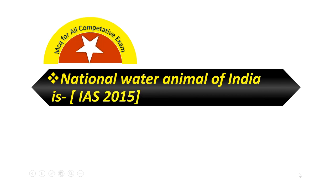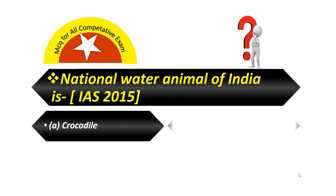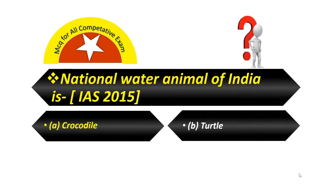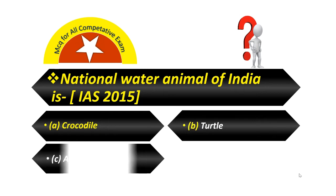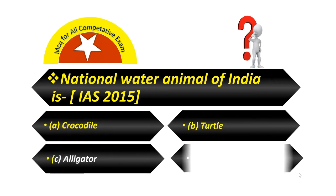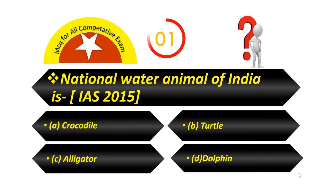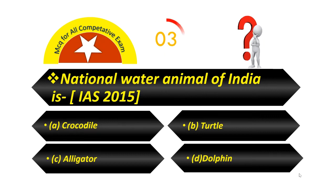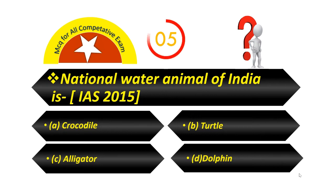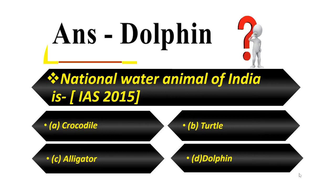National Water Animal of India is: Option A — Crocodile. Option B — Turtle. Option C — Alligator. Option D — Dolphin. Your answer is Dolphin.